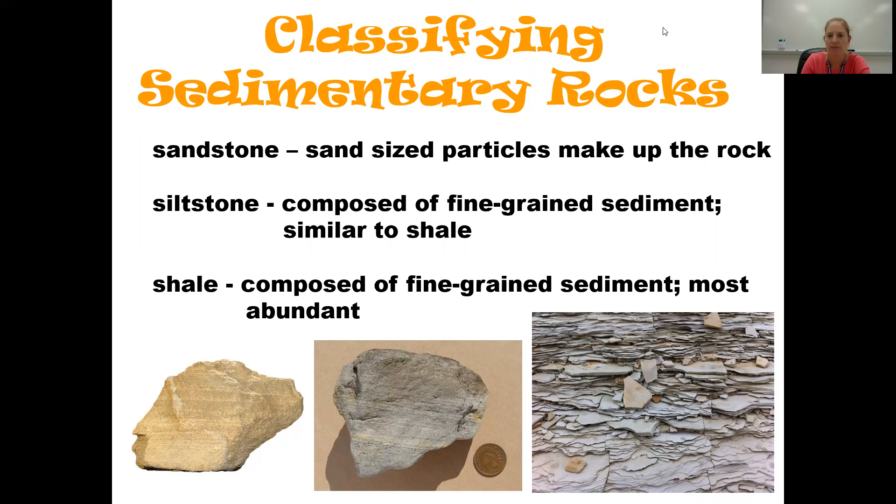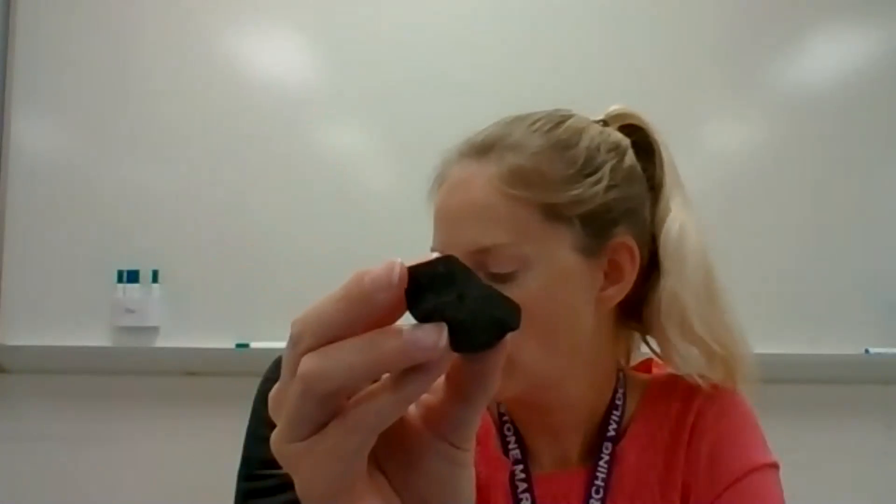Here's a red sandstone — small particles. And then with even smaller particles, this is a shale. Shale is what you see in a riverbed — if you're walking in the river and you've got those layers of rock on the side and you try to walk up them, they break. That's shale.